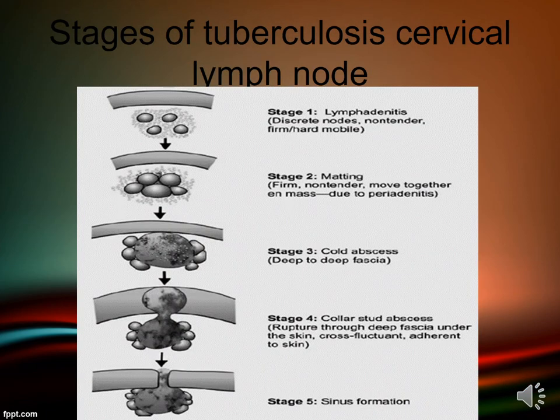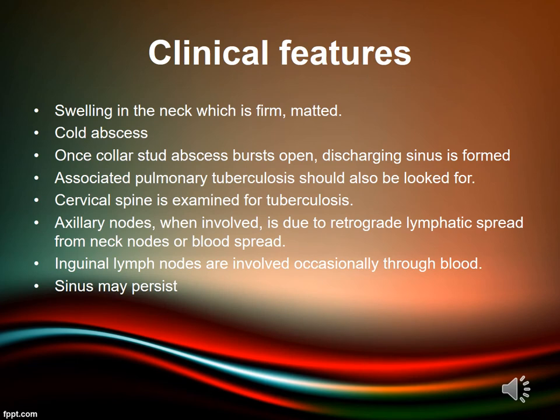The different stages of tuberculosis of cervical lymph nodes are: Stage 1 — lymphadenitis: lymph nodes are discrete, non-tender, firm to hard, and mobile. Stage 2 — matting: firm, non-tender, nodes move together en masse due to peri-adenitis. Stage 3 — cold abscess formation, usually deep to deep fascia. Stage 4 — collar stud abscess forms, ruptures through deep fascia under skin, cross-fluctuant and adherent to skin. Stage 5 — sinus formation.